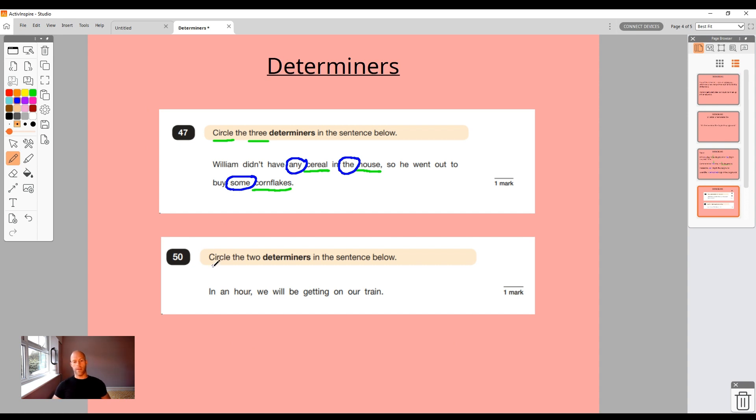Question 50 on a different paper here: circle the two determiners in the sentence below. Train, an hour. Just because it isn't a tangible thing you can touch doesn't mean it isn't a noun. It's a person, place or a thing. In an hour - so one hour, quantity. We're getting an hour. Train - possessive element to that as well. Look at the noun and basically the word before it.